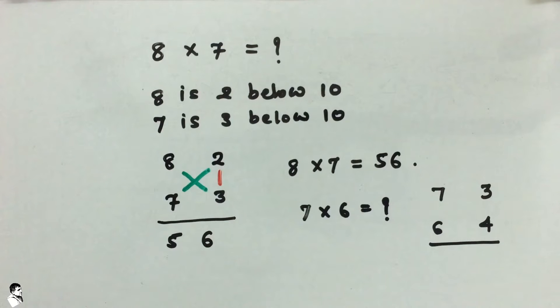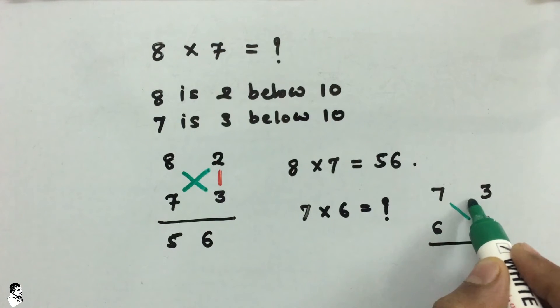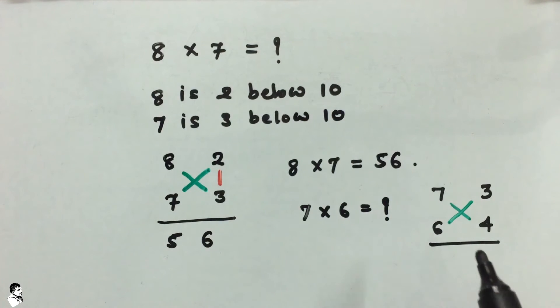Now again use that crosswise calculation either way. So the answer after crosswise subtraction is 3.